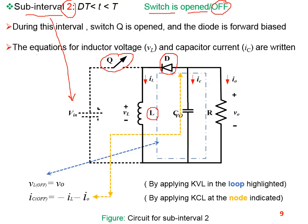Now we have to write the equations for the inductor voltage and the capacitor current for sub-interval 2. Since the switch Q is off during this sub-interval, we write the expressions for VL_off and IC_off.